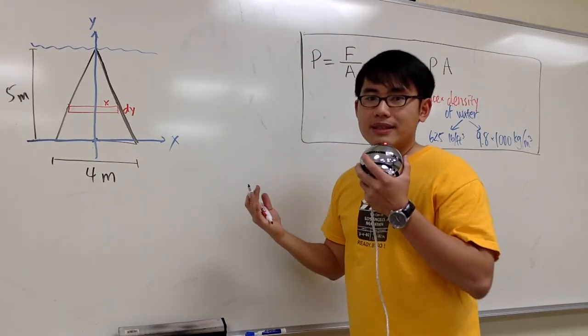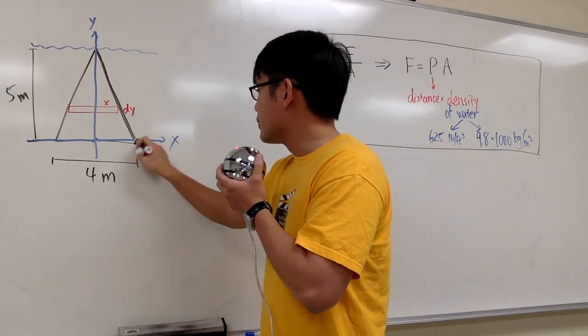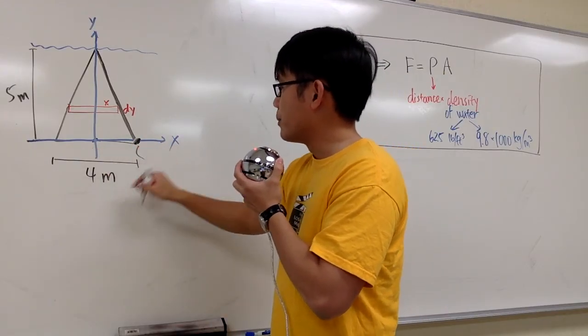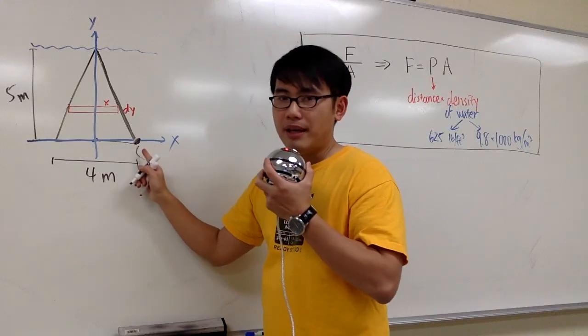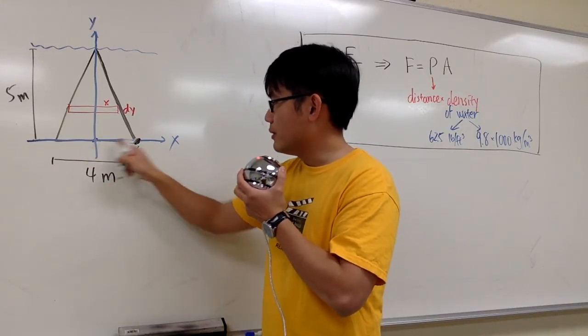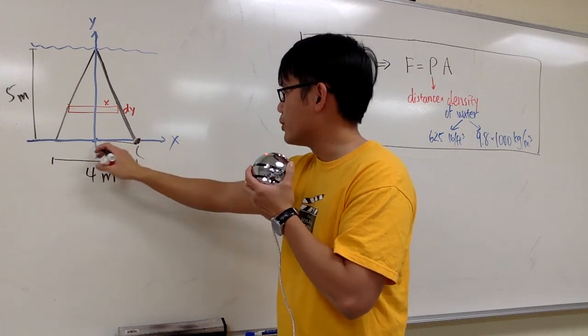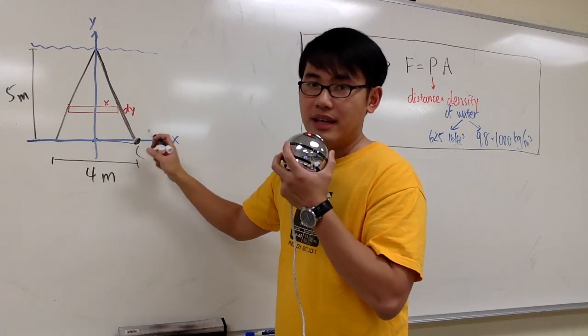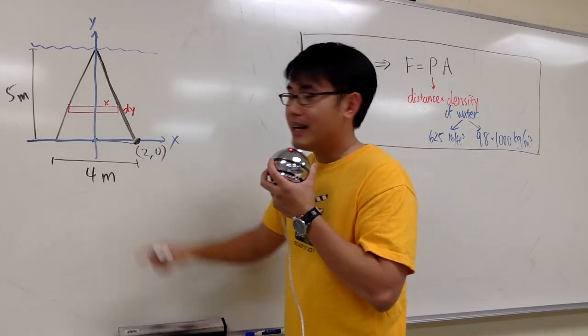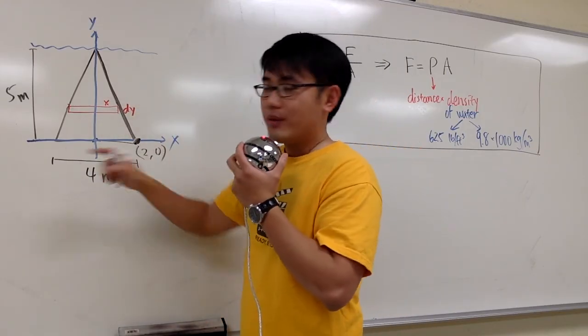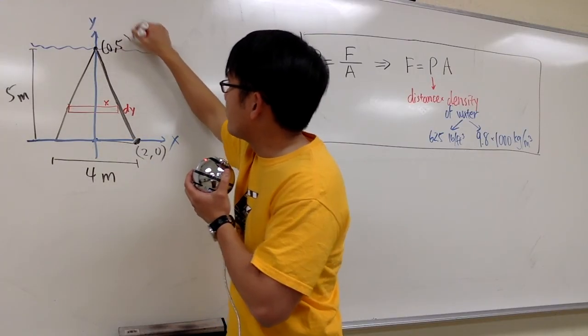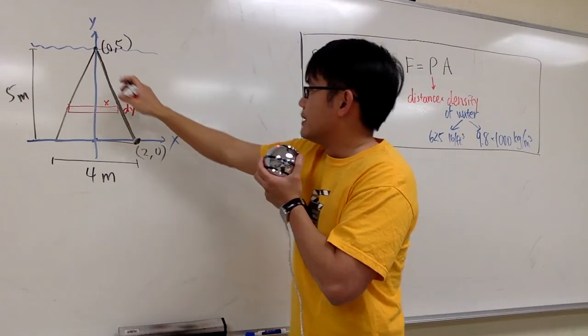So, how can we do that? Well, I want to ask you, what's this point? Based on my reference frame, this point will be the whole thing on the base of the triangle was 4, right? But I cut it into half, so this will be 2. And this is on the x-axis, so this point is 2, 0. How about this point? Well, this is 5 meter, so this right here will be 0, 5.